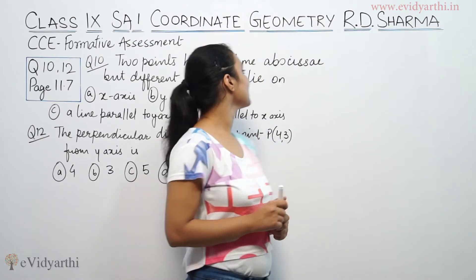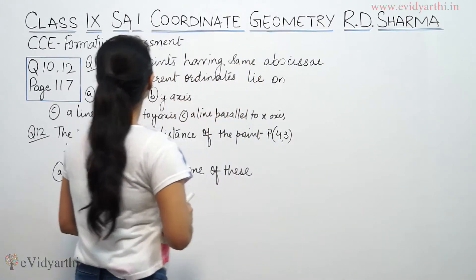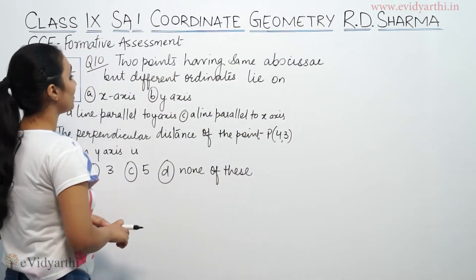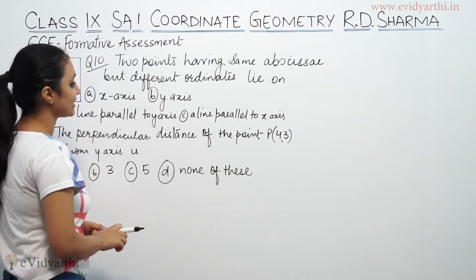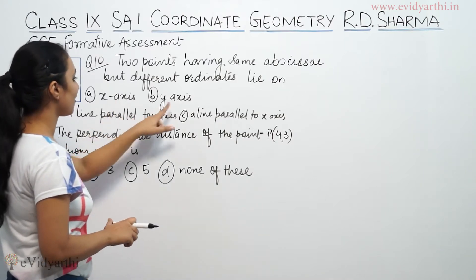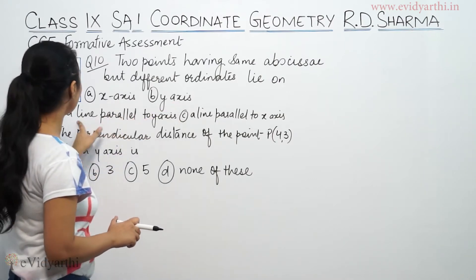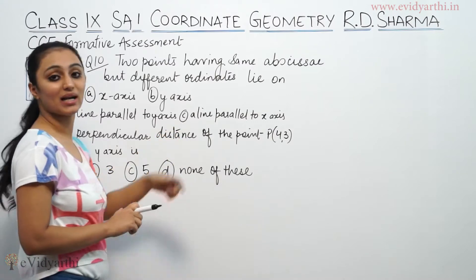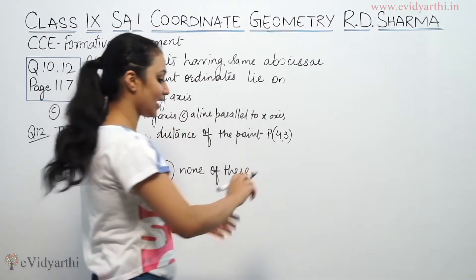The question says: two points having the same x-coordinate but different y-coordinates lie on — x-axis, y-axis, a line parallel to x-axis, or a line parallel to y-axis?